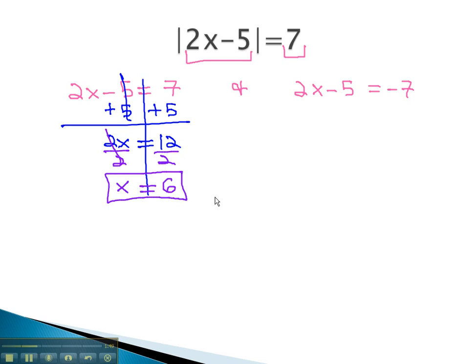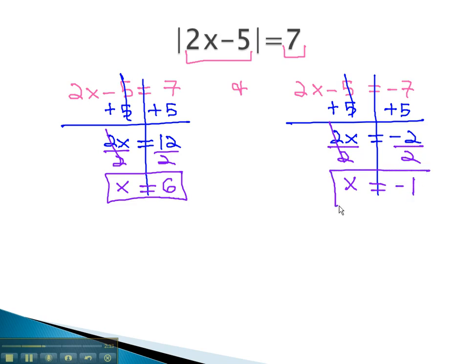To find our second solution, we solve the second equation. Again, we balance through the equal sign and start by adding 5 to both sides. We now have 2x equals negative 2. To get the x alone, we divide both sides by 2. We now have x equals negative 1.